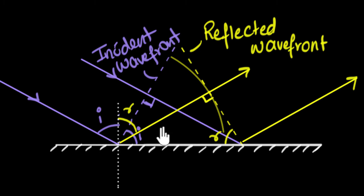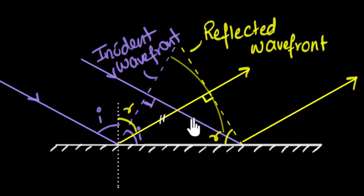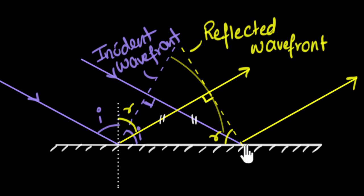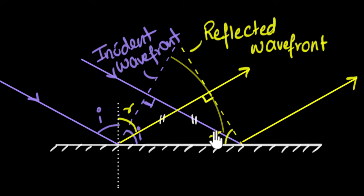Since they are right-angled triangles, we can use the RHS congruence postulate. First, the hypotenuse is common to both — great. Then I have one right angle that is also common. Now I need one more side. This side has to equal this side — and here's why: when we took that arc with the compass, we took the same distance as from here to here, because the distance traveled by the reflected wave was exactly equal to the distance traveled by the incident wave, since they have the same speed. Therefore the two triangles are congruent, and because they are congruent, the corresponding angles are equal. This angle is opposite to this side, and correspondingly this angle is opposite to this side — so I must equal R.